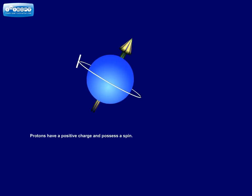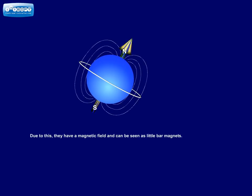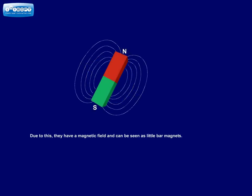Protons have a positive charge and possess a spin. Due to this, they have a magnetic field and can be seen as little bar magnets.